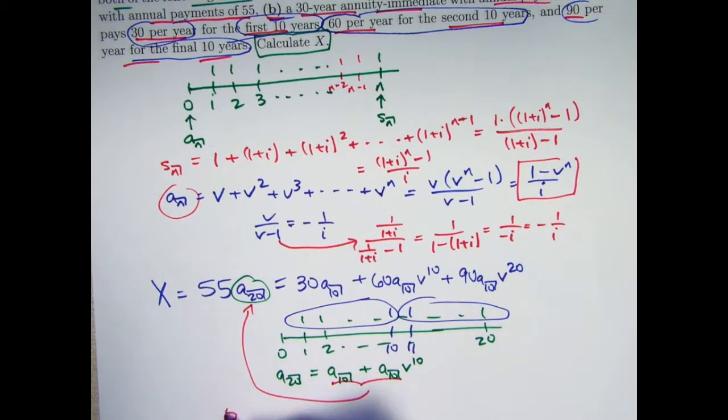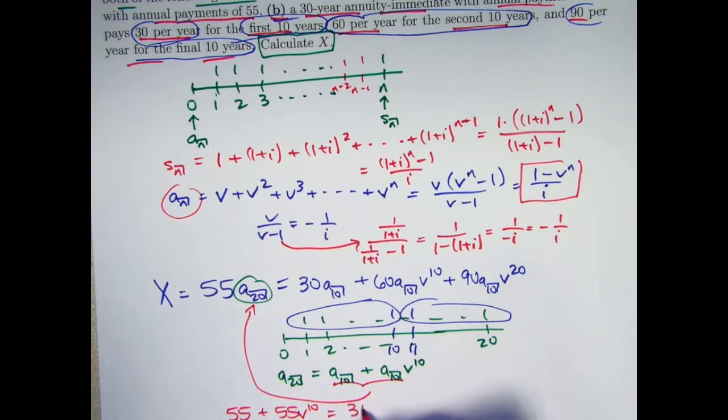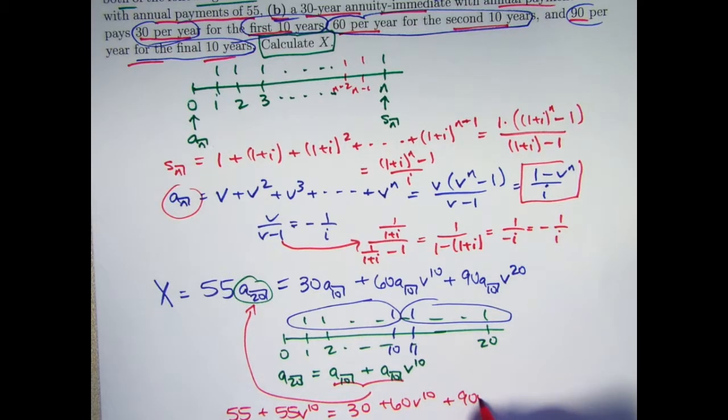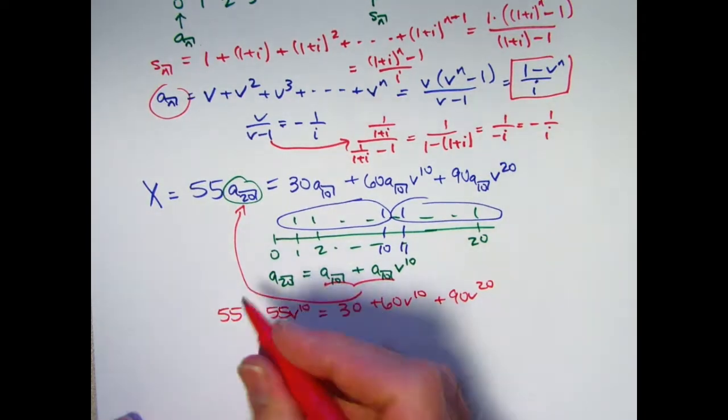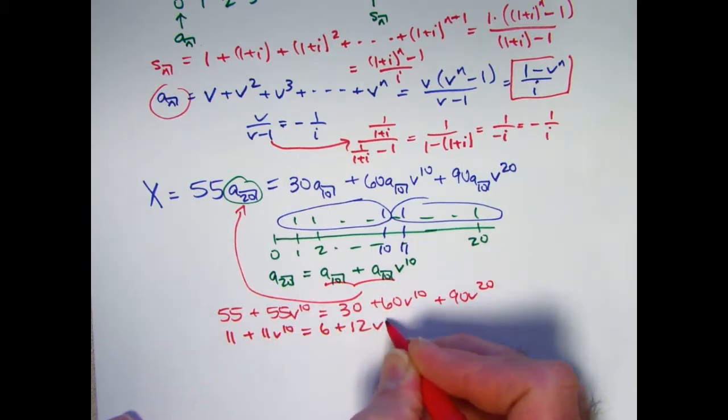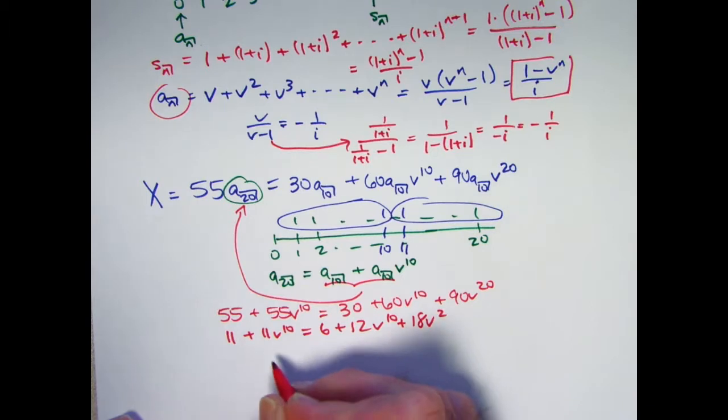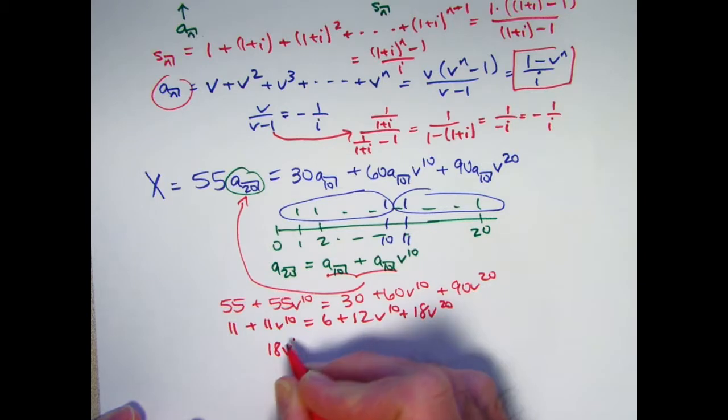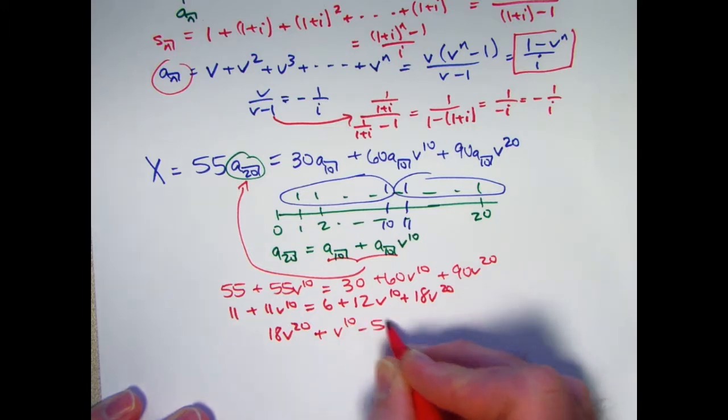What's left over is 55 + 55v^10 = 30 + 60v^10 + 90v^20. And now we have a quadratic equation in v^10. We can divide everything by 5 to simplify it a little bit. We can rearrange and subtract 11 and 11v^10 from both sides. We can write the quadratic equation as 18v^20 + v^10 - 5 = 0.